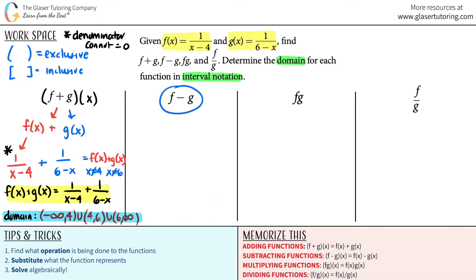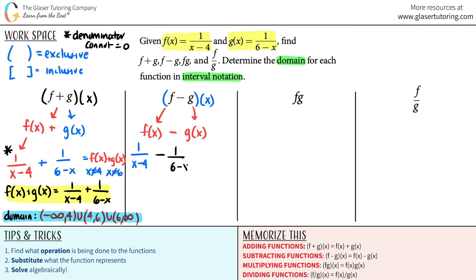Moving on to subtraction: f minus g of x, which I write as f of x minus g of x. Plugging in: f of x was 1 over x minus 4, minus g of x, which was 1 over 6 minus x. I'll put a star here for the unsimplified version to use for my domain. The denominators are different so I can't simplify further, so f of x minus g of x equals 1 over x minus 4 minus 1 over 6 minus x.